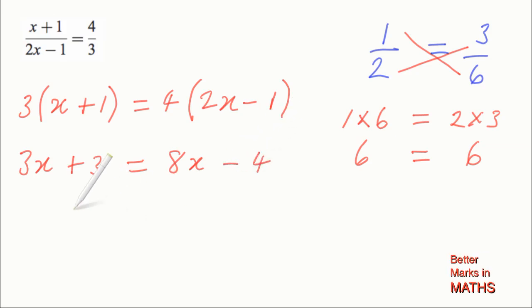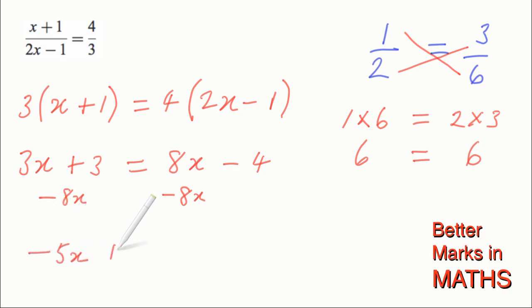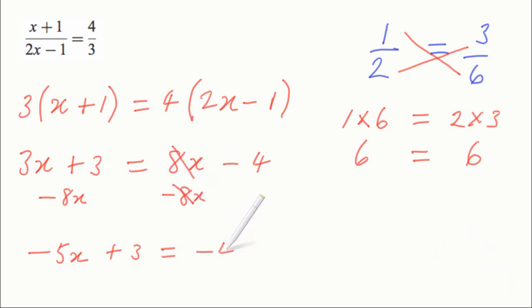Getting the like terms on the same side, I'm going to minus 8x from this side and this side, so 3x minus 8x is minus 5x plus 3 equals, and these two cancel out, equals minus 4. Then I'm going to minus 3.